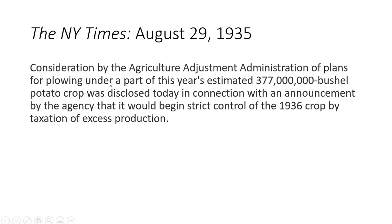Here is a New York Times article from August 29, 1935: consideration by the Agricultural Adjustment Administration of plans for plowing under a part of this year's estimated 377 million bushel potato crop was disclosed today, in connection with an announcement that it would begin strict control of the 1936 crop by taxation of excess production.